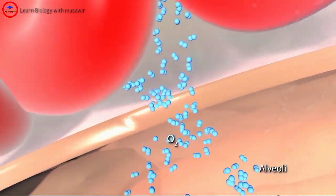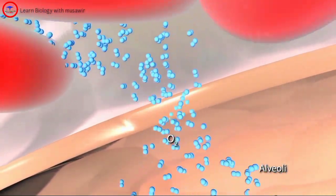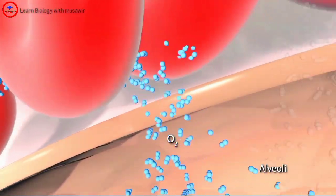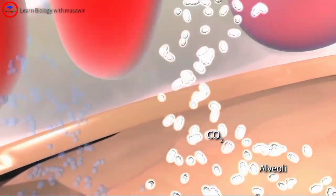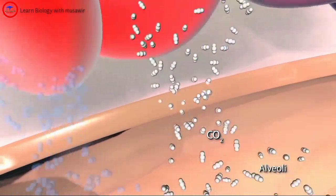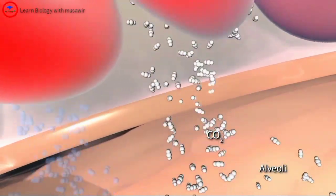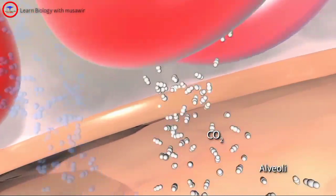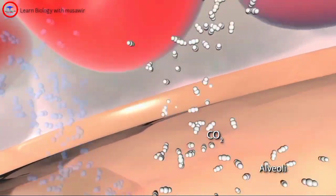Oxygen diffuses from the alveoli into the blood for transport to body tissues, and carbon dioxide, a waste product of cellular processes, diffuses from the blood into the alveoli to be exhaled from the body.